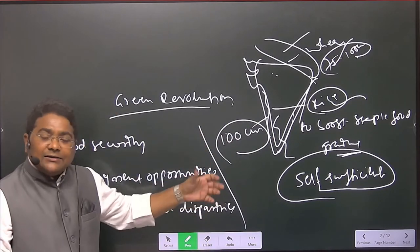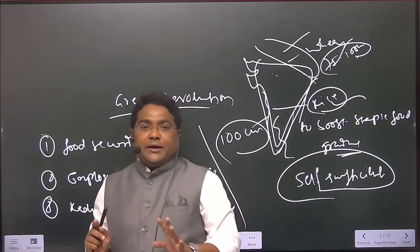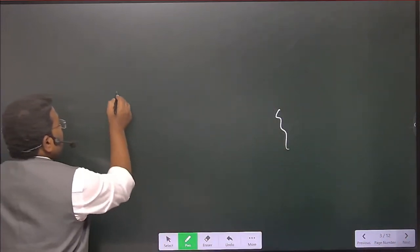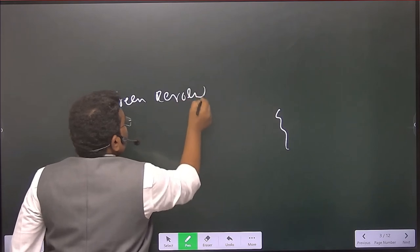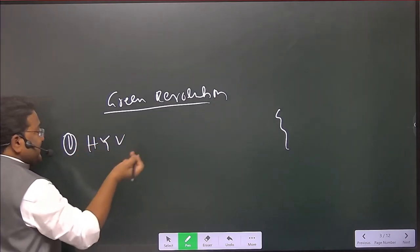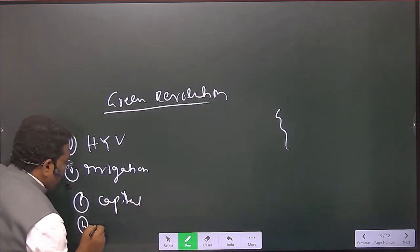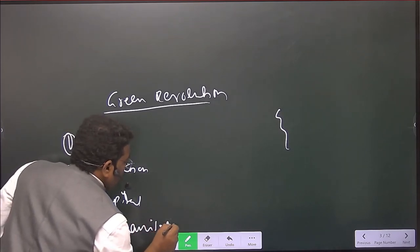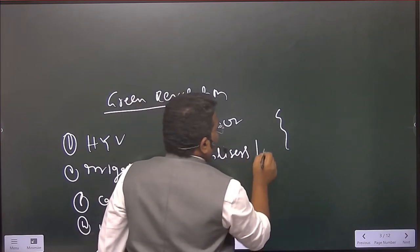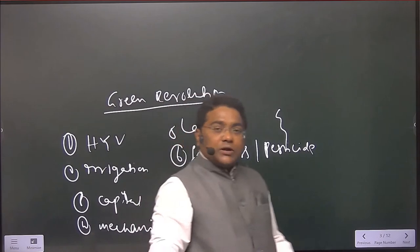Under the PL-480 agreement — which is also a previous year prelims question — we started the green revolution. The inputs required for the green revolution are: (1) high-yield variety seeds, (2) irrigation, (3) capital, (4) mechanization, (5) labor, and (6) fertilizers and pesticides. These are the six major inputs.